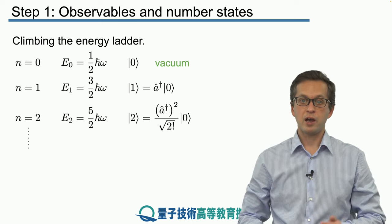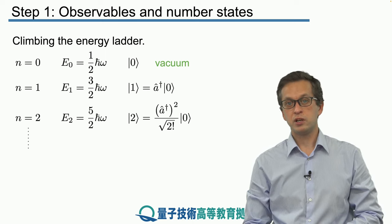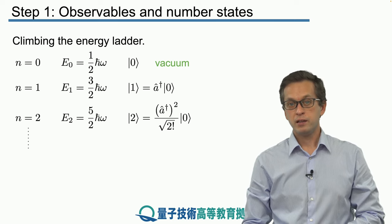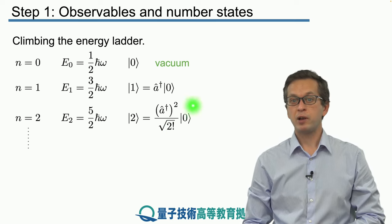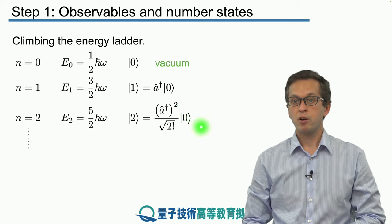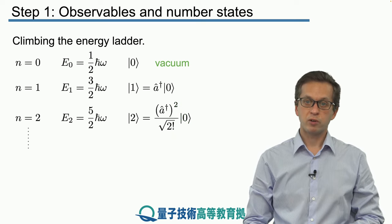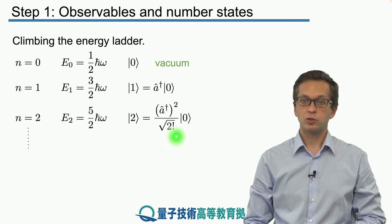We can go higher to n = 2, where the energy equals (5/2)ℏω. The eigenvector is obtained by applying the creation operator on the vacuum twice and renormalizing: |2⟩ = (A†)²/√(2!)|0⟩.